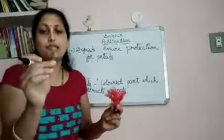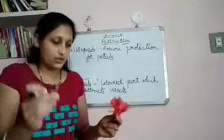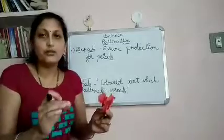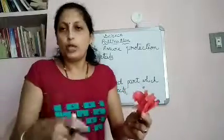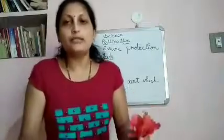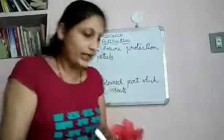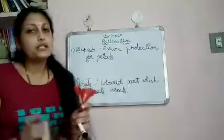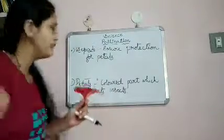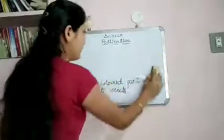Since sepals are green in color, they also take part in the production of food — meaning in the process of photosynthesis. Next is the very important part of the flower: that is the reproductive part of the flower.